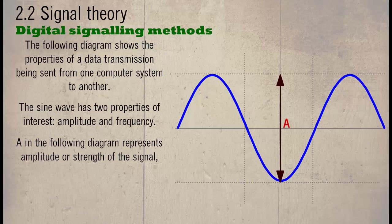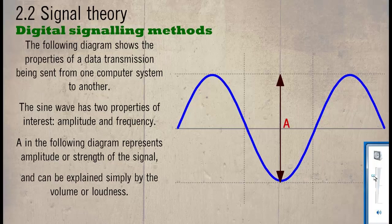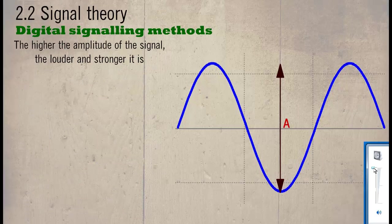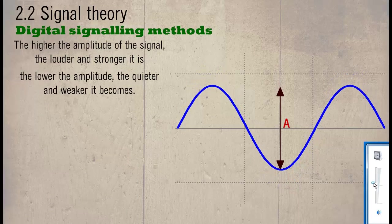A in the following diagram represents amplitude or strength of the signal and can be explained simply by the volume or loudness. The higher the amplitude of the signal, the louder and stronger it is. The lower the amplitude, the quieter and weaker it becomes.